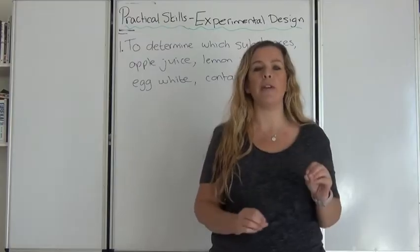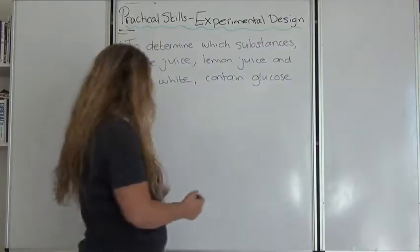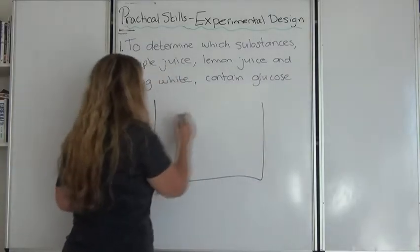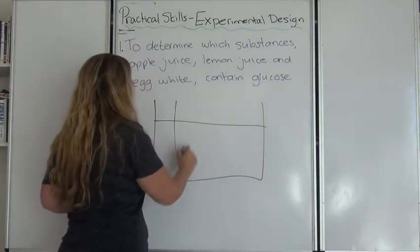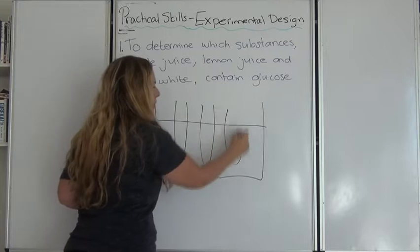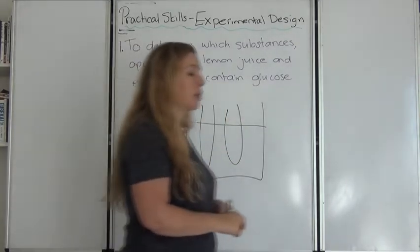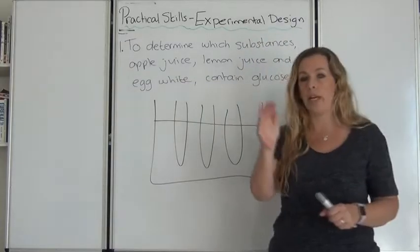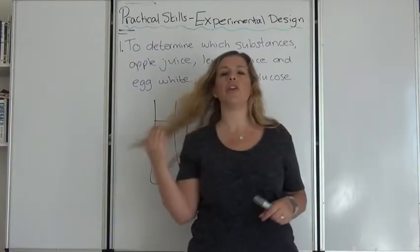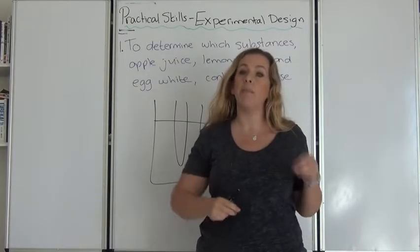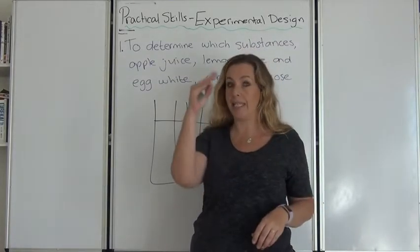So again you need to be very specific so we draw this picture before. Let's do a test tube rack with your three test tubes. Okay so how are you going to design this experiment? When you do this you need to put it in point form. So either you can use bullets which are little dots or you can use numbers. For me I feel numbers are clearer because you can see exactly what's going on.